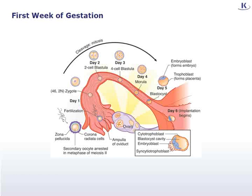The trophoblast differentiates into cytotrophoblast and syncytiotrophoblast. Implantation of the blastocyst usually occurs within six to twelve days after fertilization, typically in the distal one-third of the uterus, resulting in a normal intrauterine pregnancy. However, if these events don't take place normally, an ectopic pregnancy can occur.